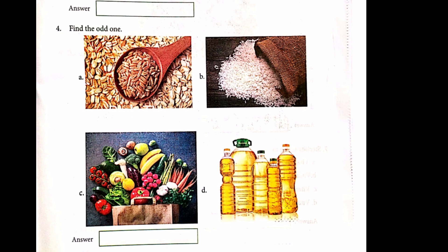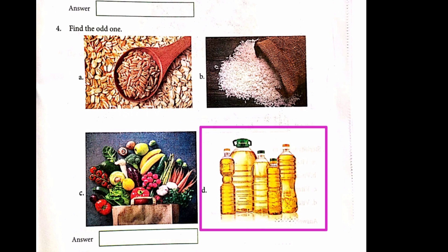Question number 4. Find the odd one out among: rice, vegetables, fruits and oil. Oil is consumed in very low quantity, so the odd one is D. Oil.